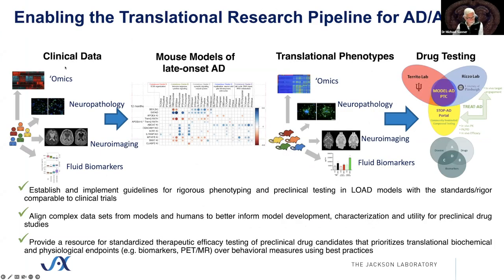The Model AD program was set up to take the clinical data we have — genetics and genomics from human populations, neuropathology, neuroimaging, fluid biomarkers — and use that to design mouse models that would better model the human condition. Critically, we're phenotyping these in ways that are translationally relevant: doing the same omics, same neuropath, same imaging, same biomarkers. That allows us to have much more confidence that a mouse model correlates with a form of human disease, as opposed to just putting a mouse in a water bath and saying we're curing Alzheimer's disease. We're really focused on quantitative translational phenotypes.